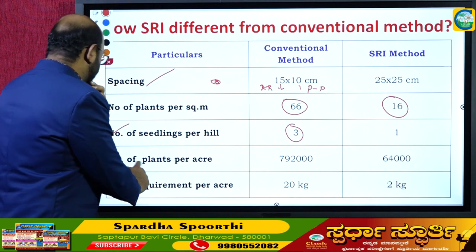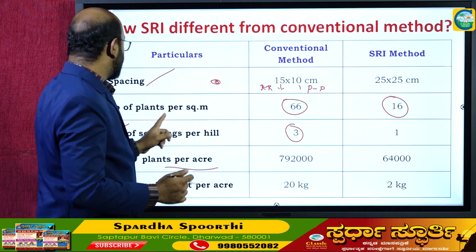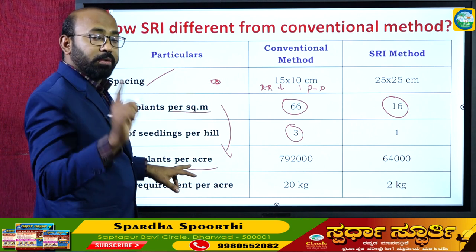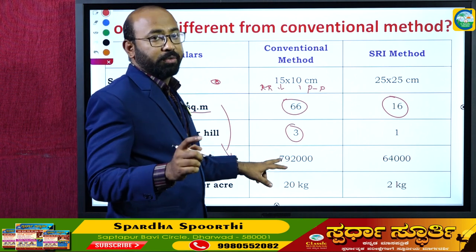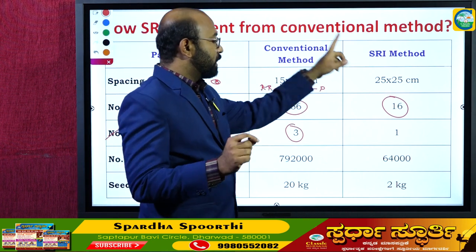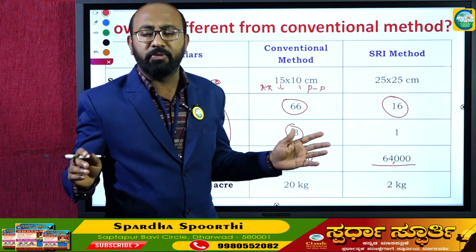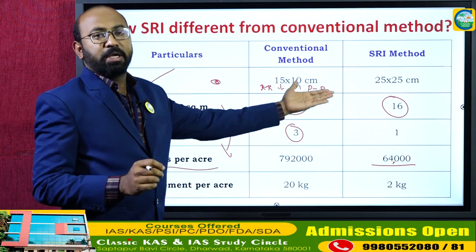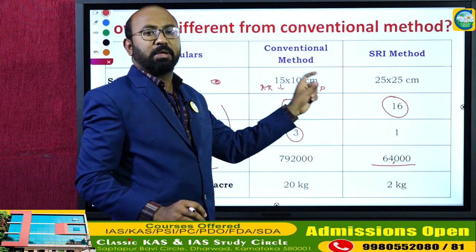For number of plants per acre: in the conventional method there are approximately 7,92,000 — around 8 lakh plants per acre. But in SRI there are only around 64,000 plants. There is a huge difference in plant population per acre between the conventional method and the SRI method.